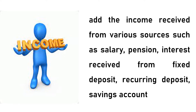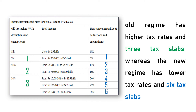To calculate your total income, you must add the income received from various sources such as salary, pension, interest received from fixed deposits, recurring deposits, savings accounts, and so on. With regards to income tax slabs, the old regime has higher tax rates and three tax slabs, whereas the new regime has lower tax rates and six tax slabs.